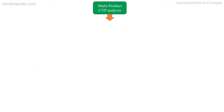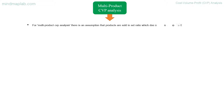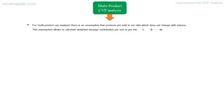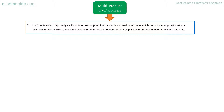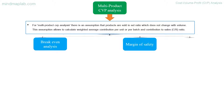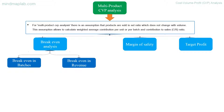Multi-product CVP analysis: for multi-product CVP analysis, there is an assumption that products are sold in a set ratio which does not change with volume. This assumption allows calculation of a weighted average contribution per unit or per batch and contribution to sales (CS) ratio. Break-even, margin of safety, and target profit are then calculated accordingly.